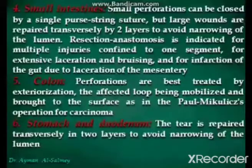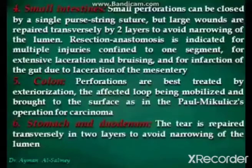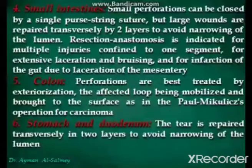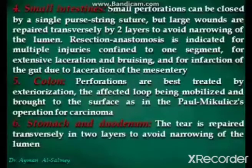Colonic perforations are best treated by externalization, the affected loop being mobilized and brought to the surface as in the Paul-Mikulicz operation for carcinoma. For stomach and duodenum injuries, the tear is repaired transversely in two layers to avoid narrowing of the lumen.